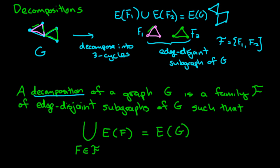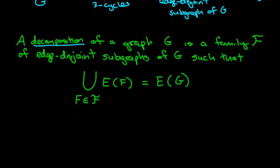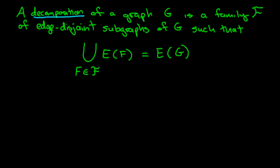So now let's take a look at some more complicated examples. The types of examples I'm interested in right now involve decomposing into families of graphs. This family could be composed of any types of graphs, but if every graph in the family is a cycle, then we call it a cycle decomposition.